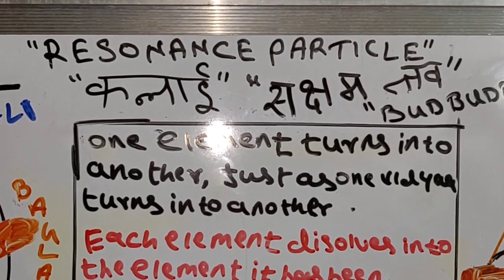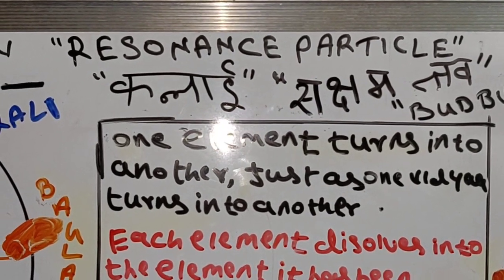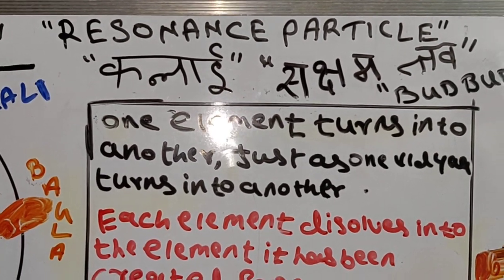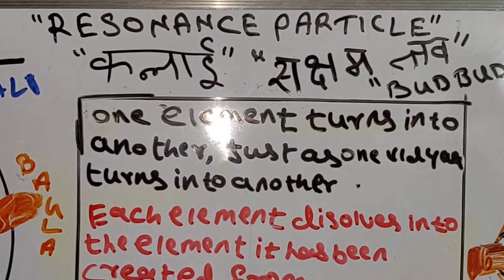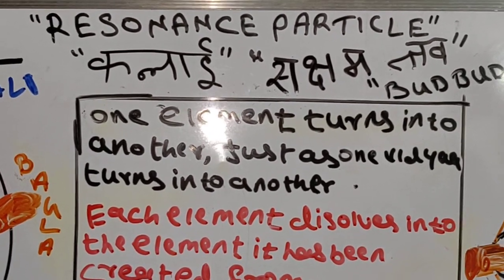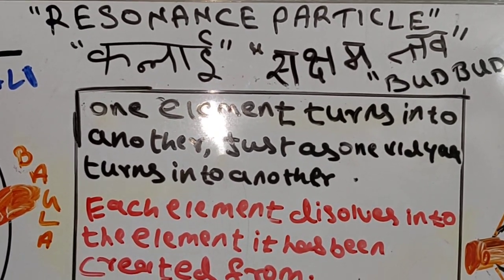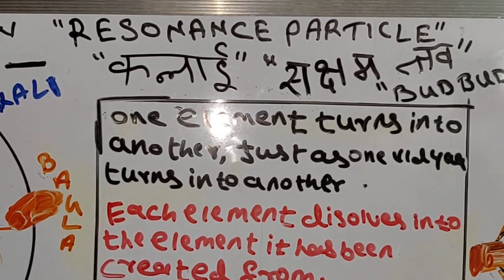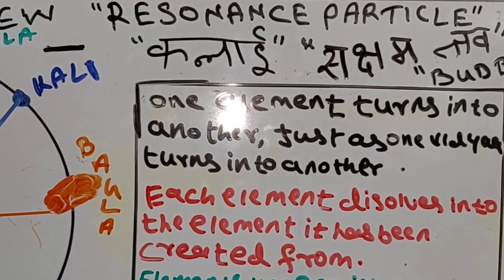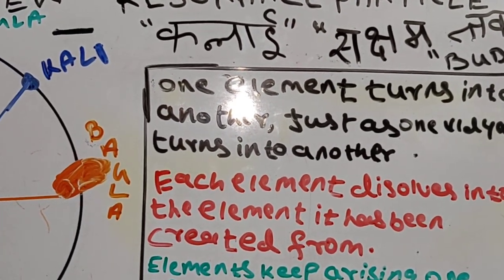Einstein actually discovered the resonance particle. This resonance particle — they get together and make an electron, and electrons make atoms, and atoms make the whole world.